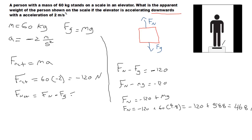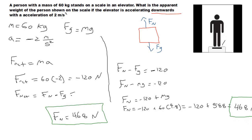So the apparent weight is 468 Newtons. The apparent weight is less than the actual weight. The actual weight was 588 Newtons, but if you're going downwards and accelerating, the apparent weight is going to be 468 Newtons.